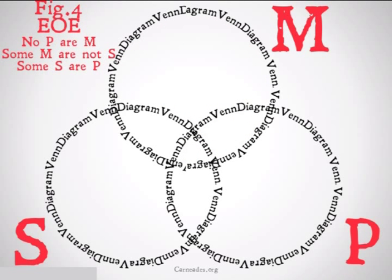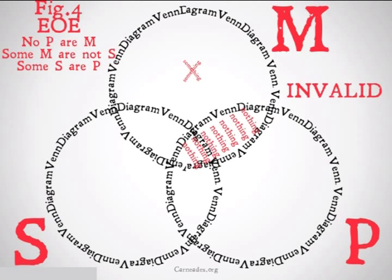Finally, figure 4, EOE, no P are M. We know we have to do our universal first, so we'll fill that in first. Some M are not S, we put an X up there. Therefore, some S are P. Our conclusion doesn't appear there, so this is going to be an invalid argument.